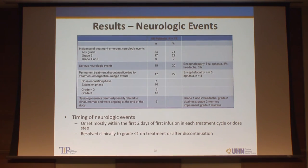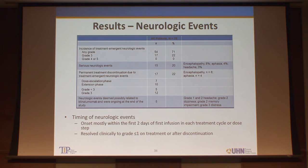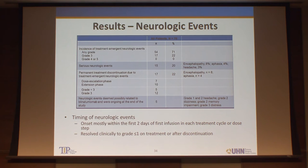Looking at neurologic events in more detail: in the expansion population, 20% had what was defined as a neurologic severe event — encephalopathy in 8%, aphasia in 4%, headache 3%. This is something to keep an eye on as trials move forward, though typically these events occurred within the first couple of days of infusion and resolved to grade 1 or better upon discontinuation or with supportive care.